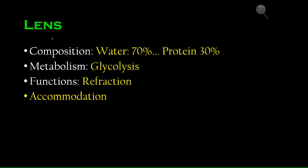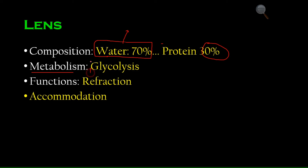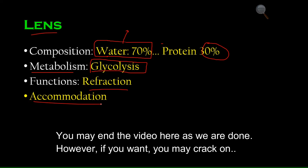The lens is mostly water — about 70% water and 30% protein. Because the lens is avascular, it receives no blood supply and cannot get oxygen, so most of its cells function through anaerobic glycolysis, which does not require oxygen.